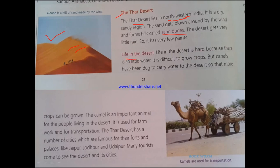Now let's talk about life in the desert. Life in the desert is hard because there is so little water — it is difficult to grow crops. But canals have been dug to carry water to the desert so that more crops can be grown. The camel is an important animal for the people living in the desert; it is used for farm work and for transportation.